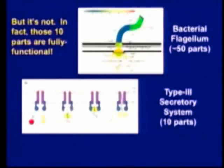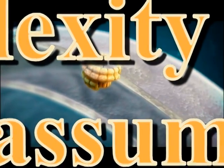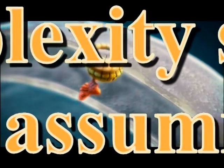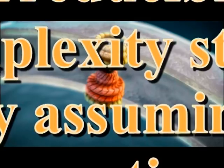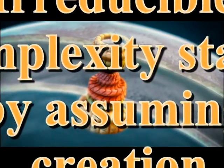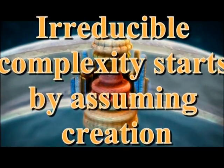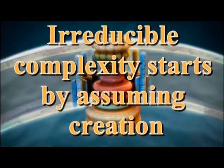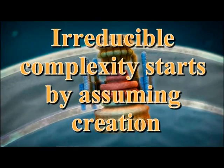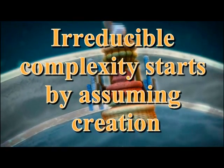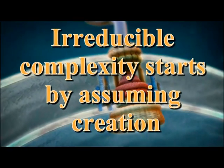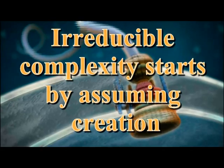I know most of you are going, 'of course, the type 3 secretory system.' It should easily be recognized and understood without the slightest degree of subtlety that irreducible complexity is predicated on the demonstrably false presupposition that all biological structures are static in their function and that the observable phenomenon of evolutionary modification simply does not exist.